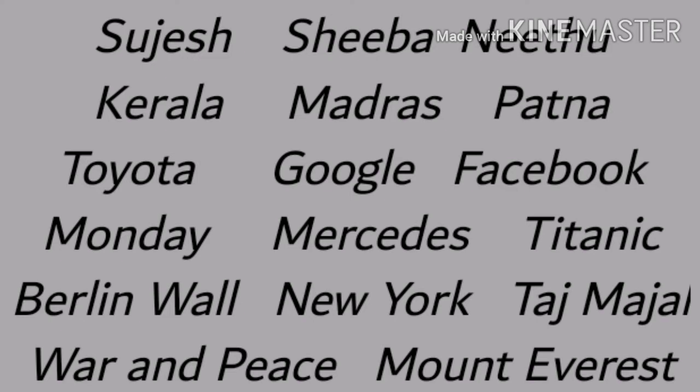Have you noticed that all these nouns begin with a capital letter or block letter? A proper noun always begins with a capital letter. And if a proper noun has two parts, both parts begin with a capital letter — Berlin Wall, New York, Taj Mahal (T and M are capital), War and Peace, Mount Everest (M and E are capital). So a proper noun means the name of a particular or specific person, place, or thing, and it begins with a capital letter.